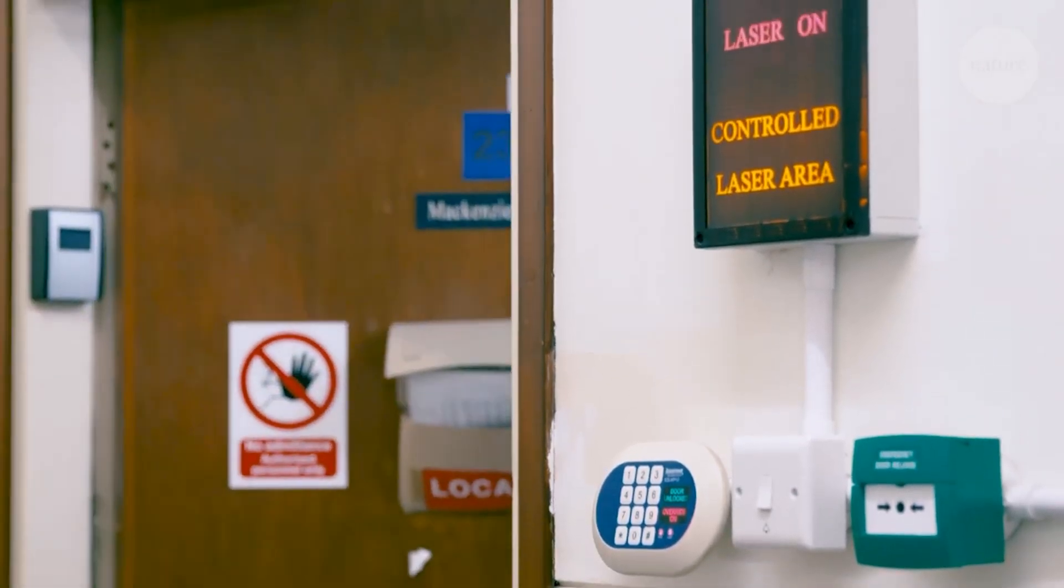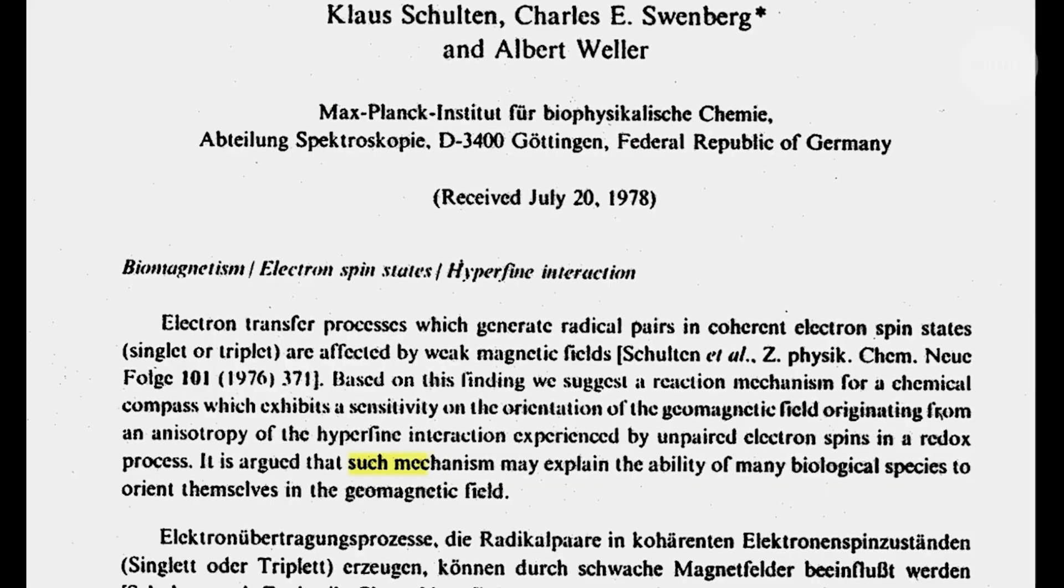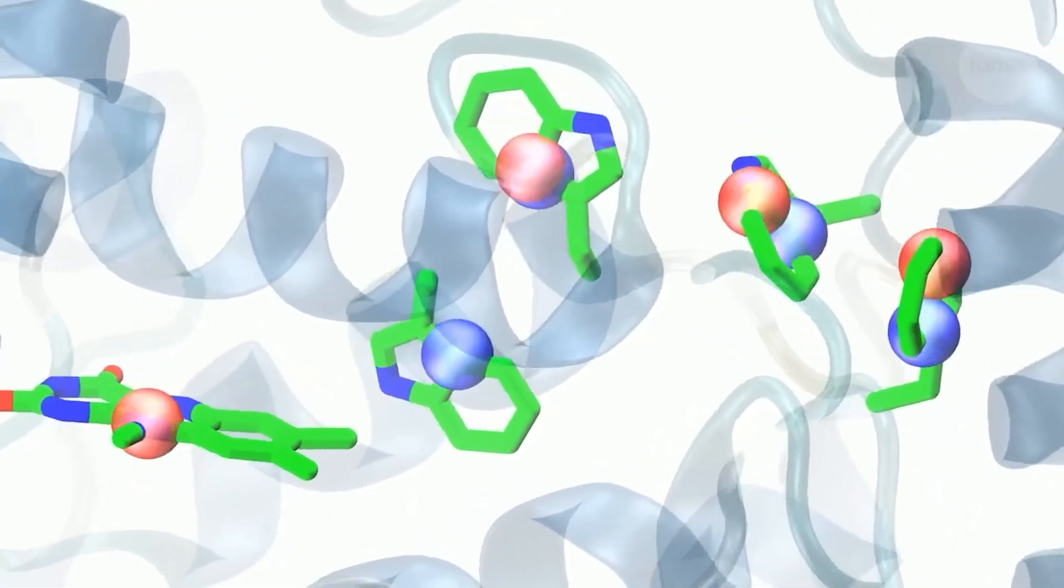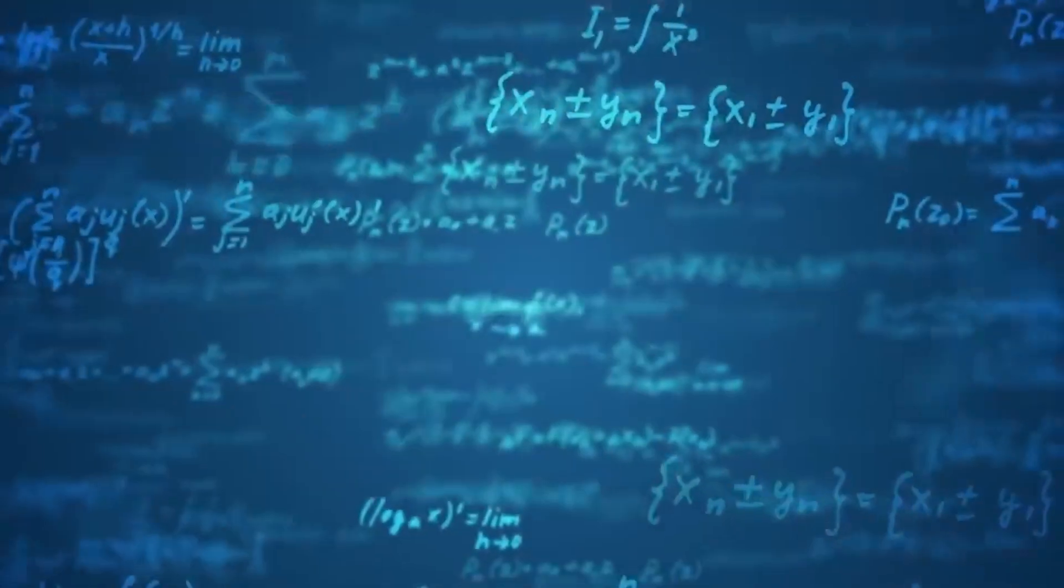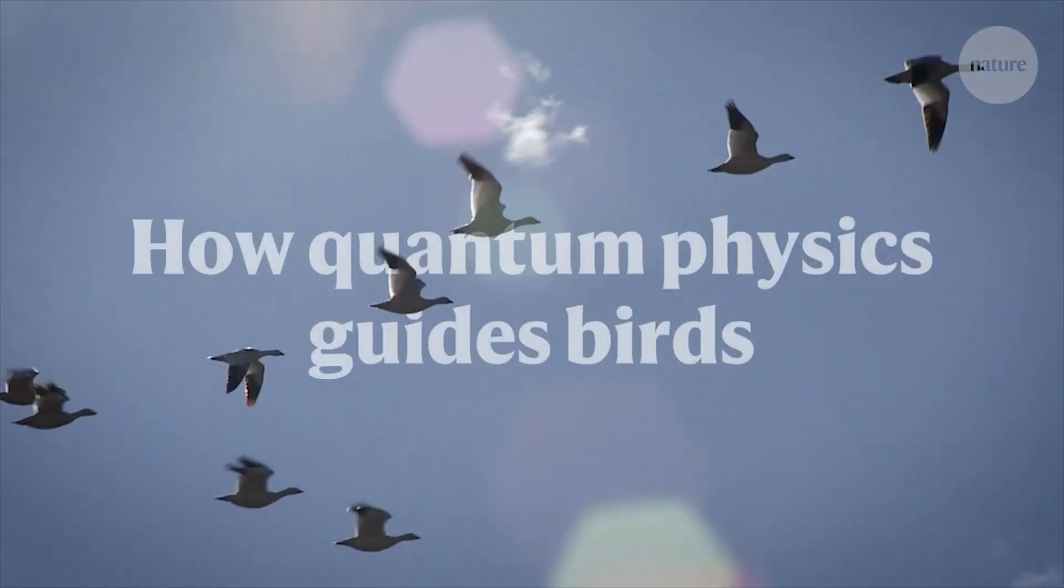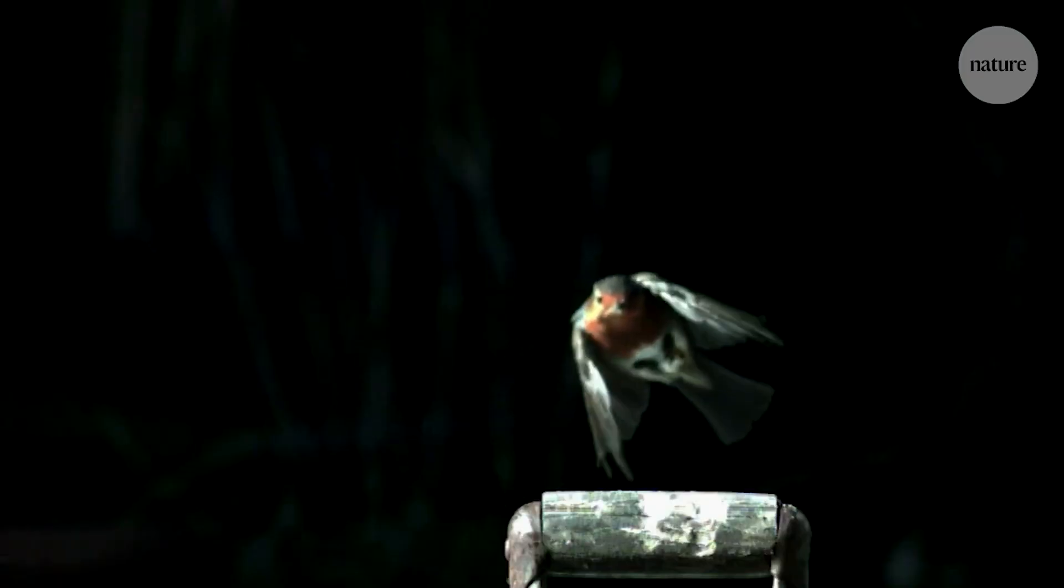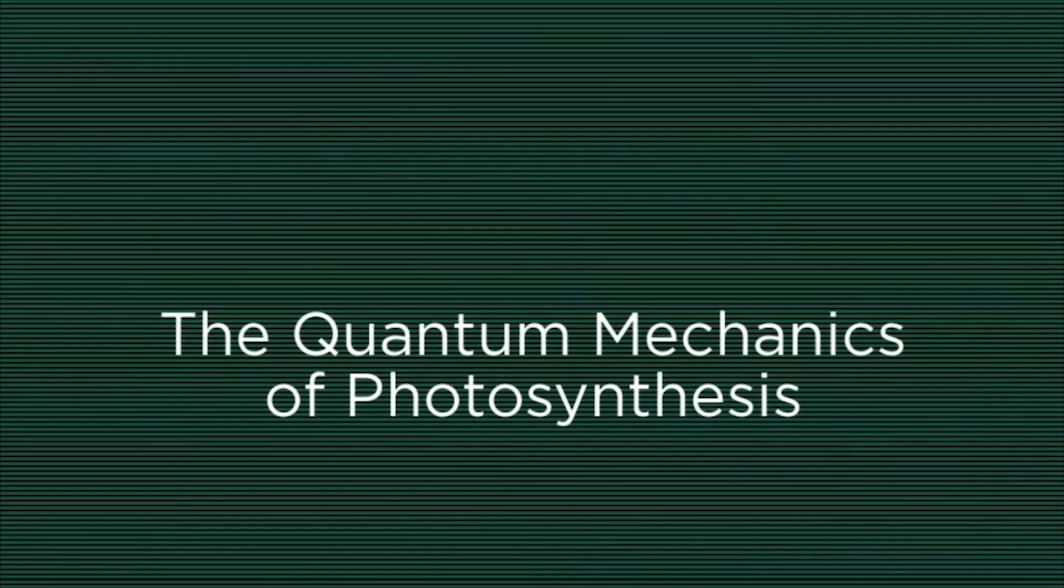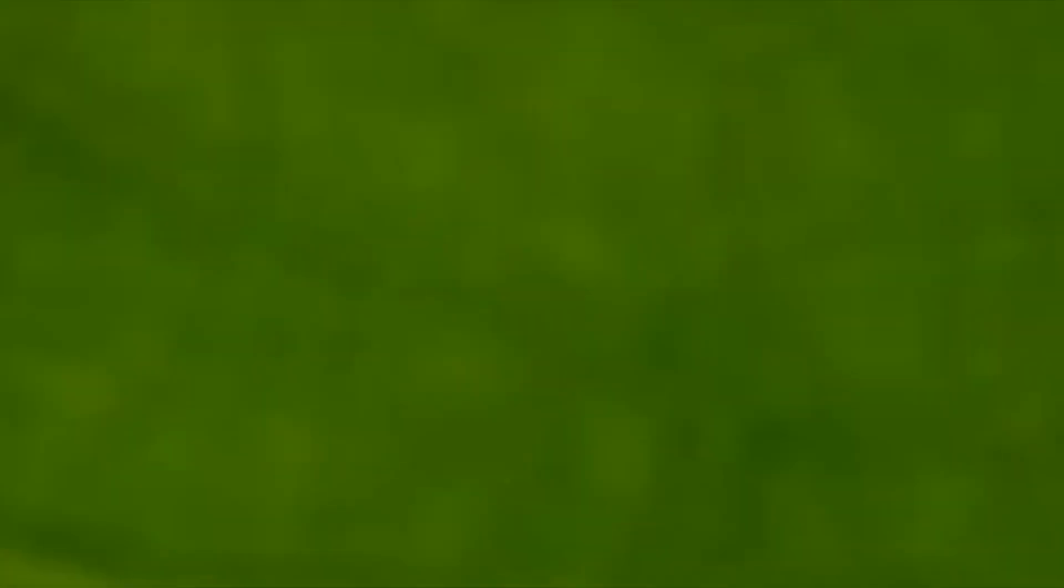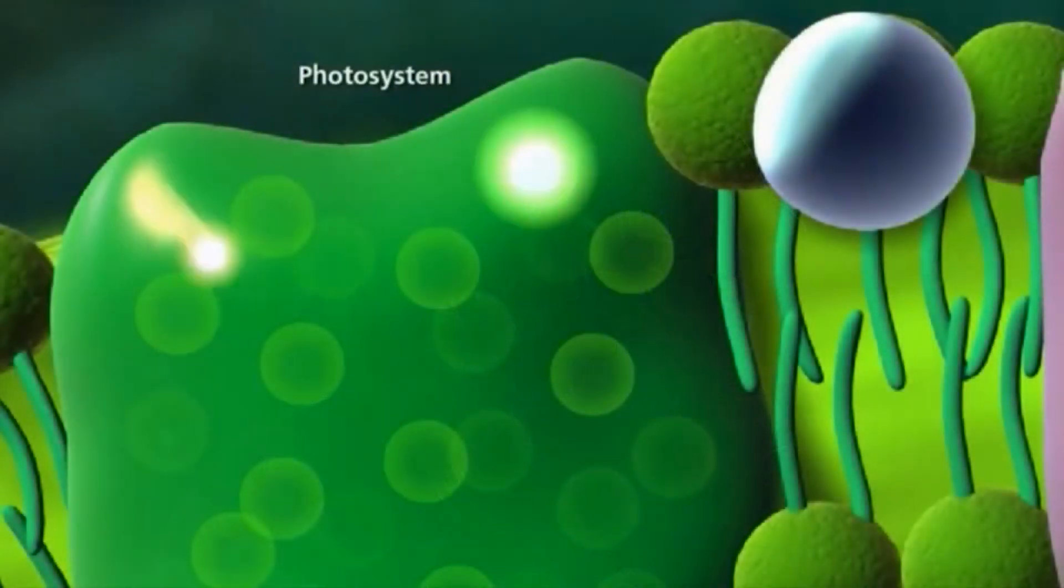Scientists are also exploring how quantum mechanics might play a role in biological processes. This emerging field called quantum biology suggests that nature may use quantum effects in ways we are only beginning to understand. For example, some birds navigate using the Earth's magnetic field, and researchers believe they might be using quantum entanglement to do so. Similarly, the efficiency of photosynthesis may rely on quantum superposition. If true, this would mean that life itself is more quantum than we ever imagined.